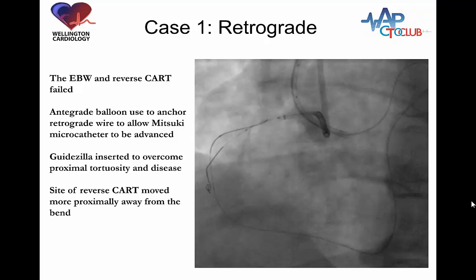The wire was changed out for a Pilot 200, which allowed the retrograde microcatheter to be advanced, and it was then changed to a GAIA Second wire. We now have a situation where the retrograde wire appears to have gone sub-intimal. It's important to note the large gap between the antegrade and retrograde wires on the bend. A guidewire has been advanced through the antegrade catheter to take the proximal disease and tortuosity out of play, a balloon has been advanced, and a reverse CART has been attempted.